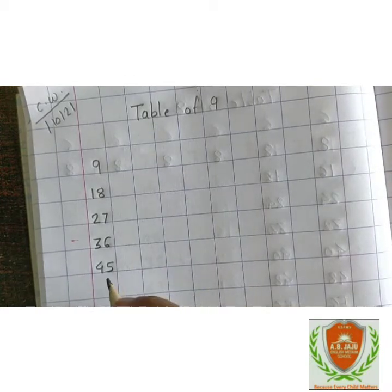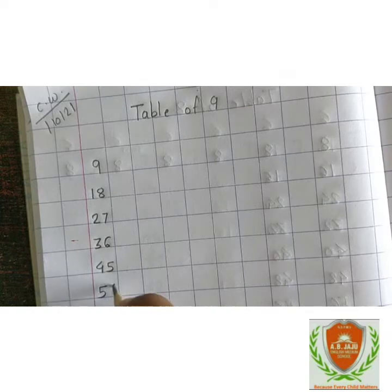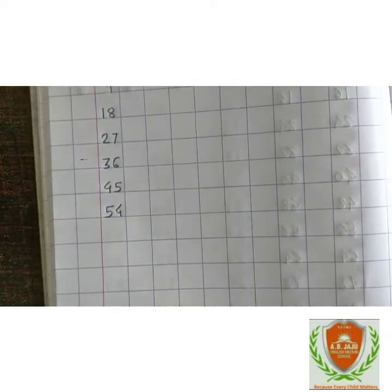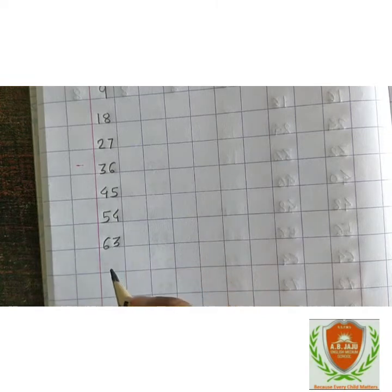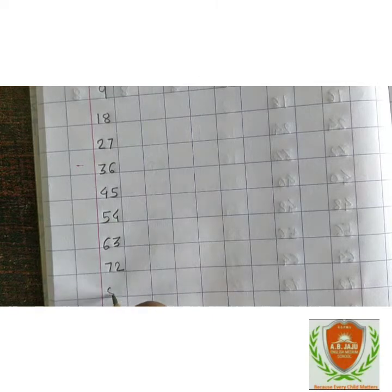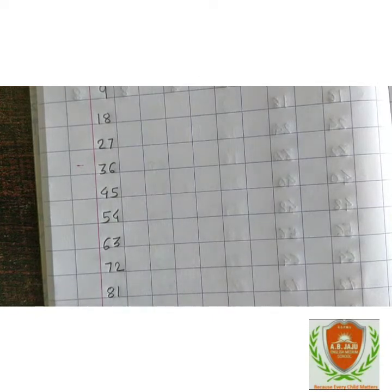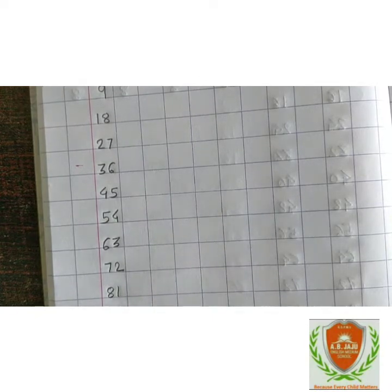9 fives are 45, 9 sixes are 54, 9 sevens are 63, 9 eights are 72, 9 nines are 81, 9 tens are 90.